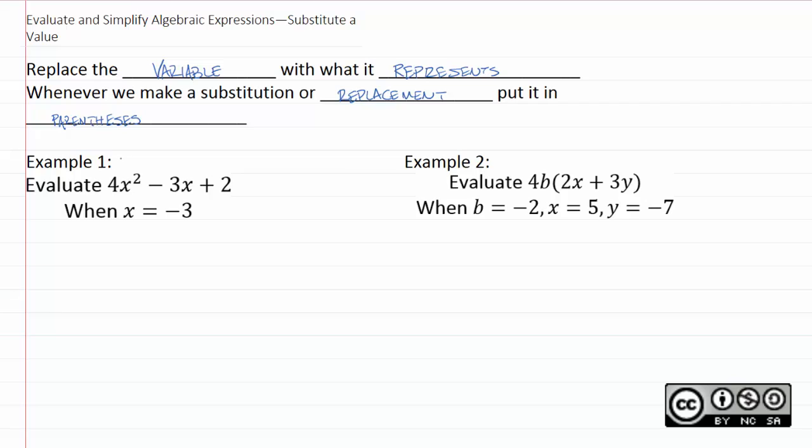So for example one, we're just going to take negative three, put it in parentheses, and put it everywhere x appears. And so we'll have four times negative three squared, minus three times negative three, plus two.